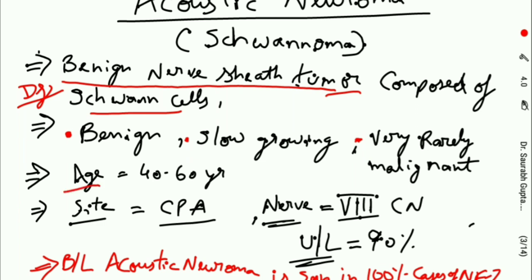The most common age presentation is 40 to 60 years of age. The site of acoustic neuroma is usually CP angle, the cerebellopontine angle, in 80% of cases. The nerve involved is the eighth cranial nerve, and it is mostly unilateral in 90% of cases.